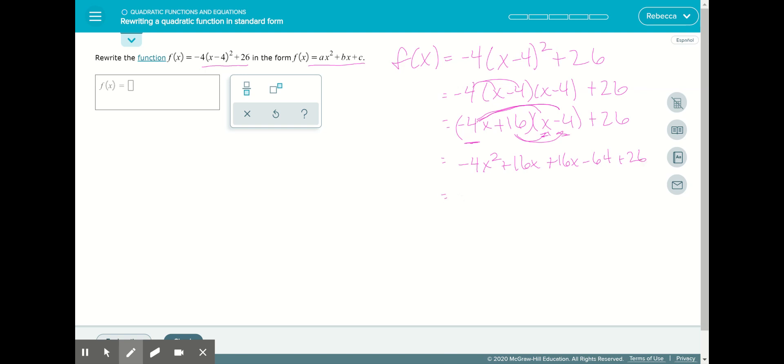All right. So negative 4x squared. 16x and 16x get combined to 32x. And then we need to combine negative 64 and 26. And you can use a calculator or combining skills. And we're going to get negative 38 when we combine negative 64 and 26. And that is the answer.